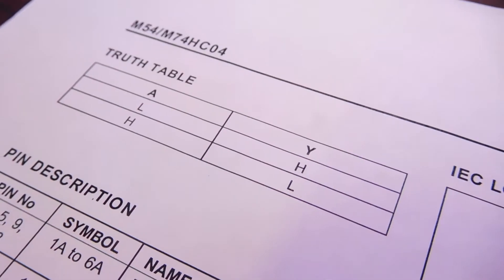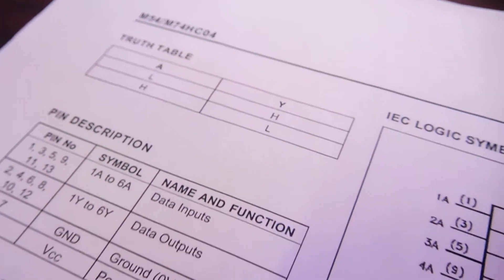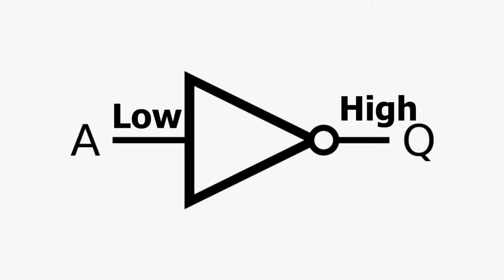There are two possible outputs in a NOT gate: high and low. A low input produces a high output, and a high input produces a low output.